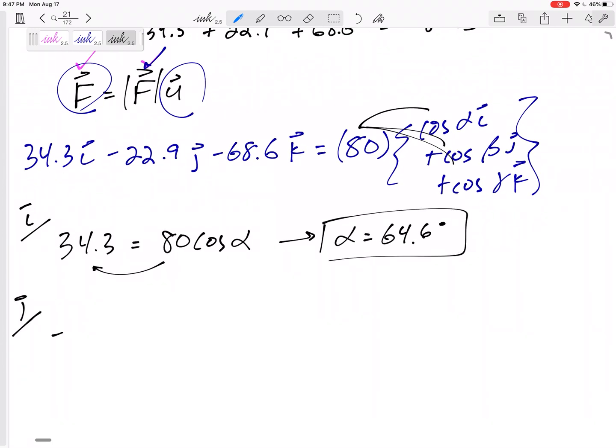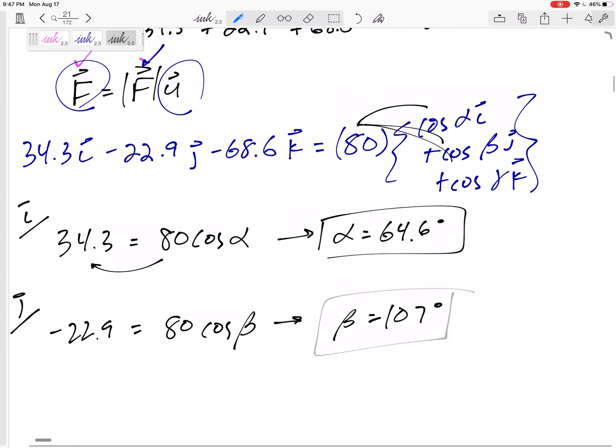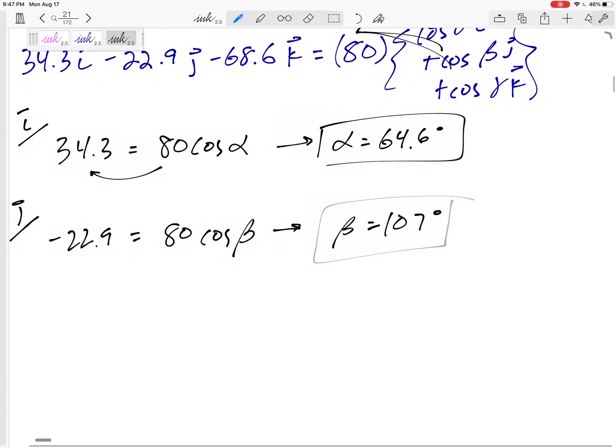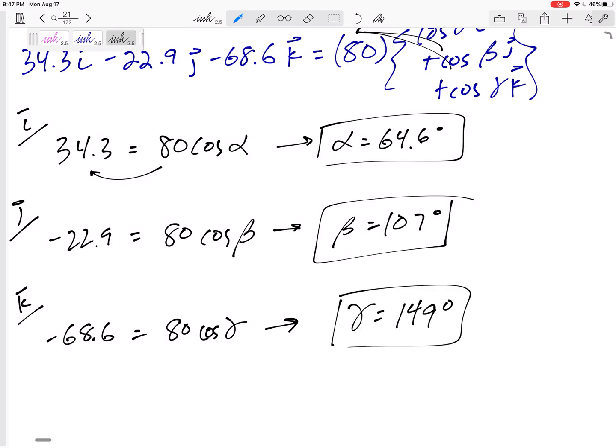j, left-hand side of the equation, negative 22.9 equals 80 cosine beta. Beta is 107. And k negative 68.6 equals 80 cosine gamma. And solve for gamma. Gamma is 149 degrees. And that is it.